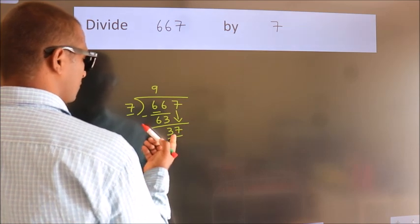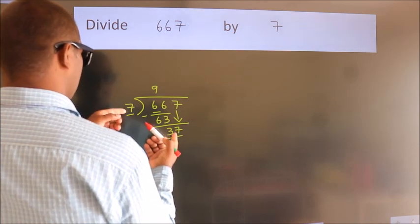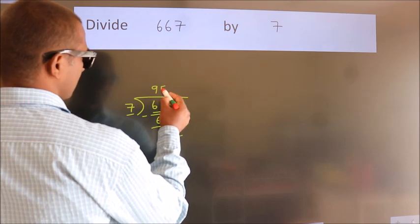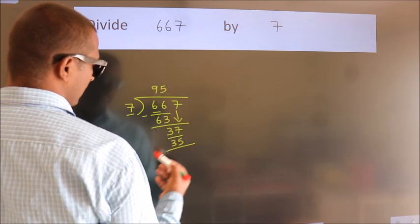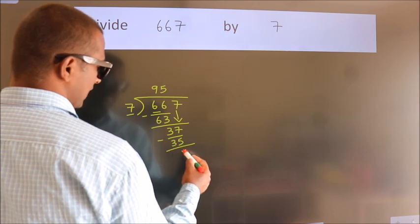A number close to 37 in the 7 table is 7 times 5, which is 35. Now we subtract and get 2.